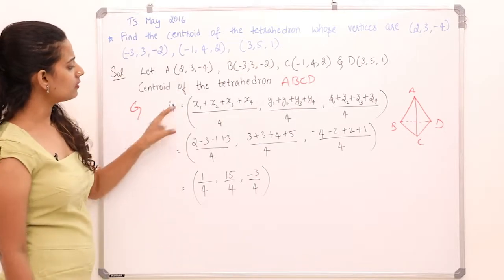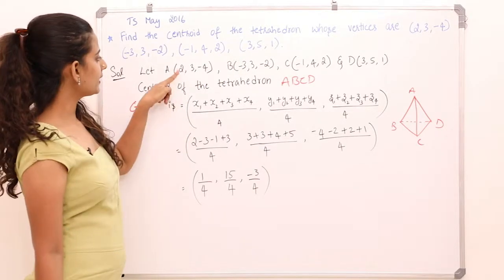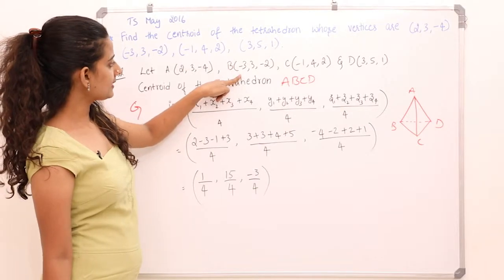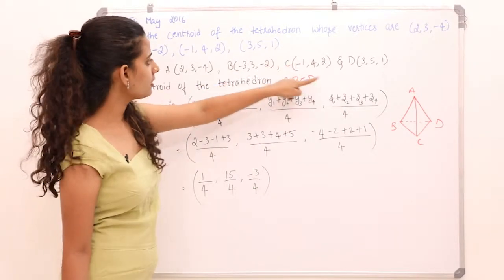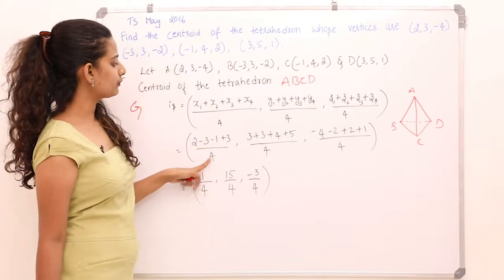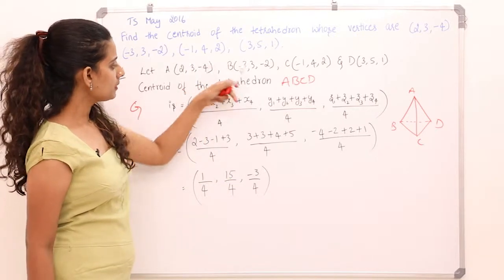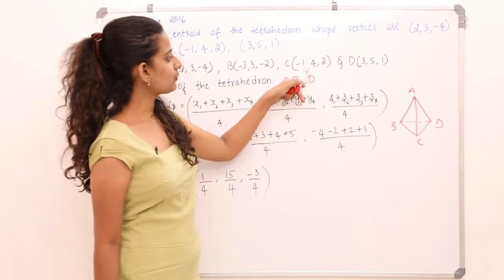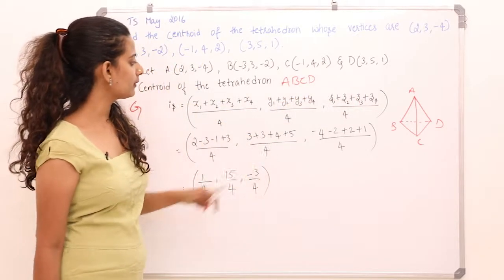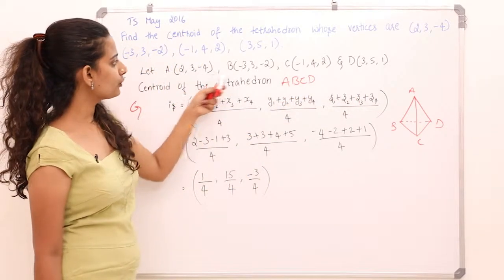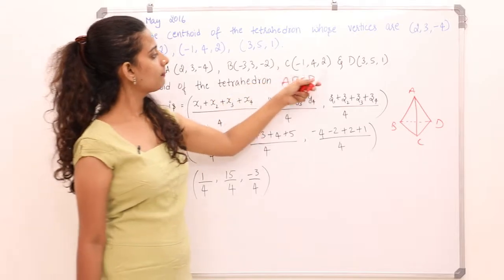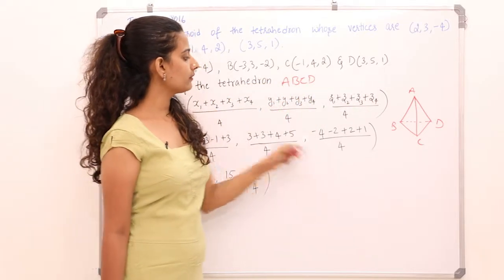So, we got all these points here. Let us solve it. So it is 2 + (-3) + (-1) + 3 divided by 4. Again, 3 + 3 + 4 + 5 divided by 4. Then, -4 + (-2) + 2 + 1 divided by 4.